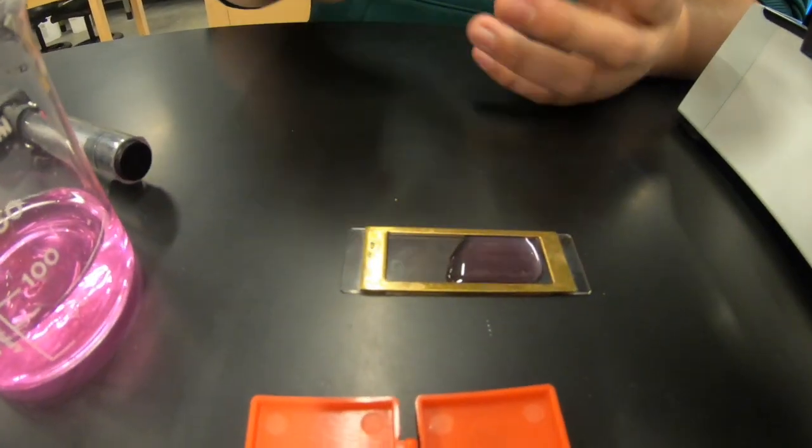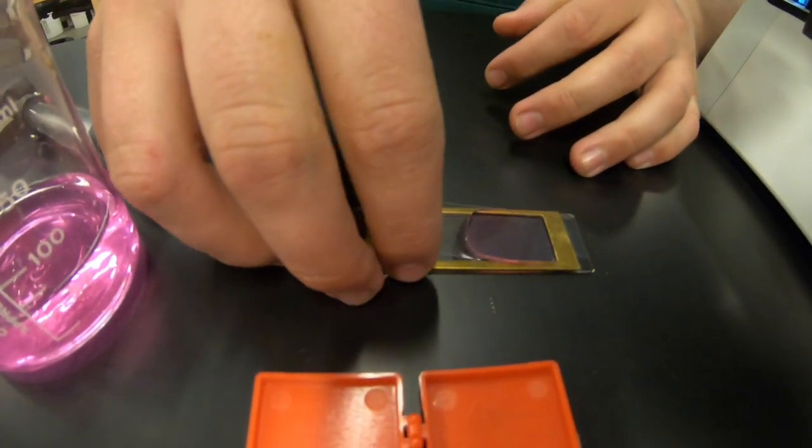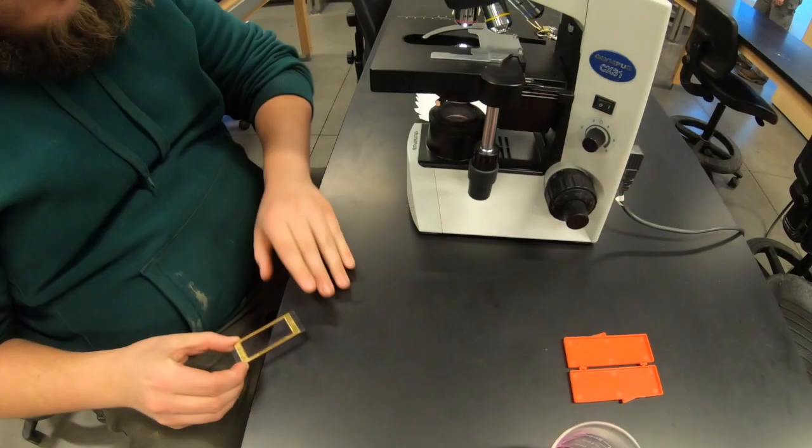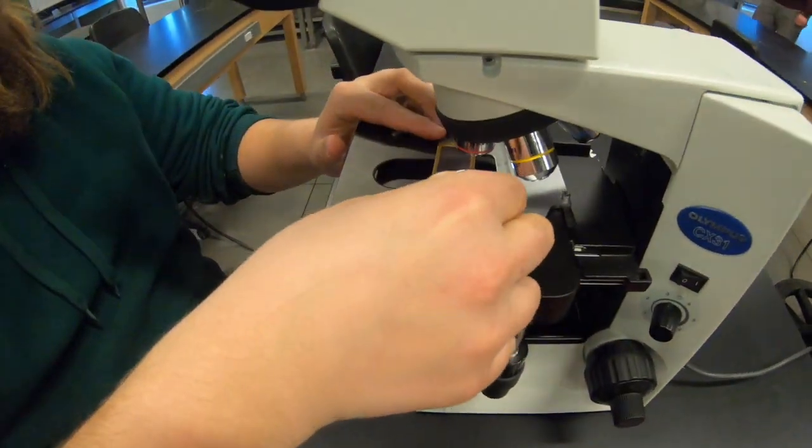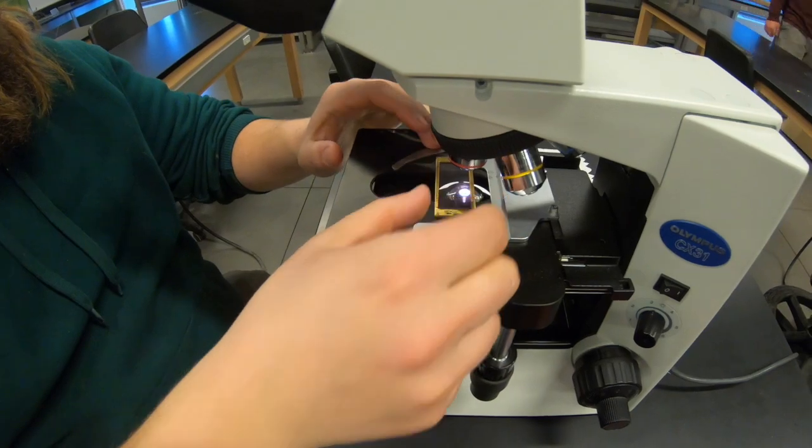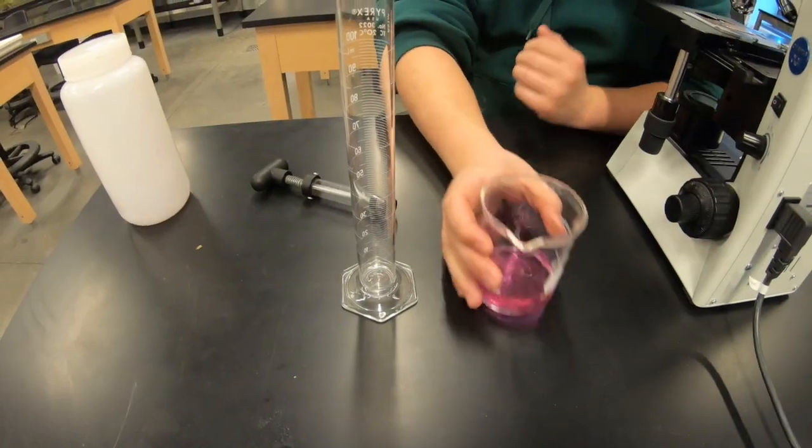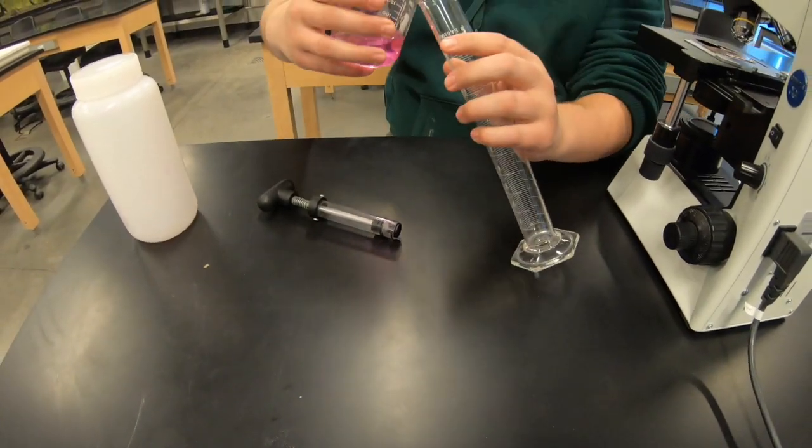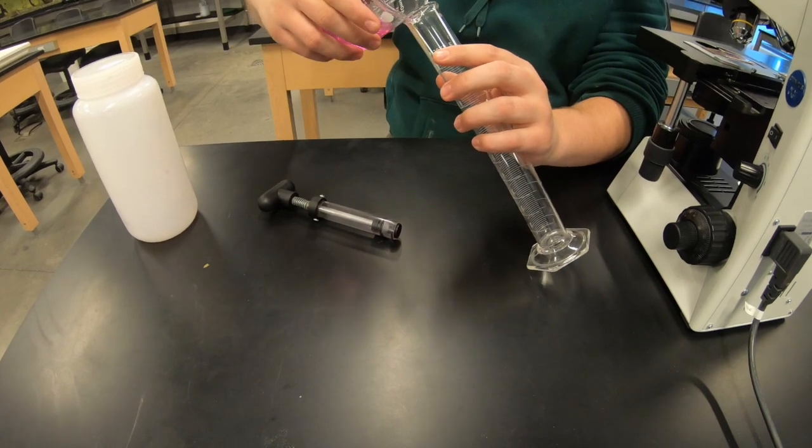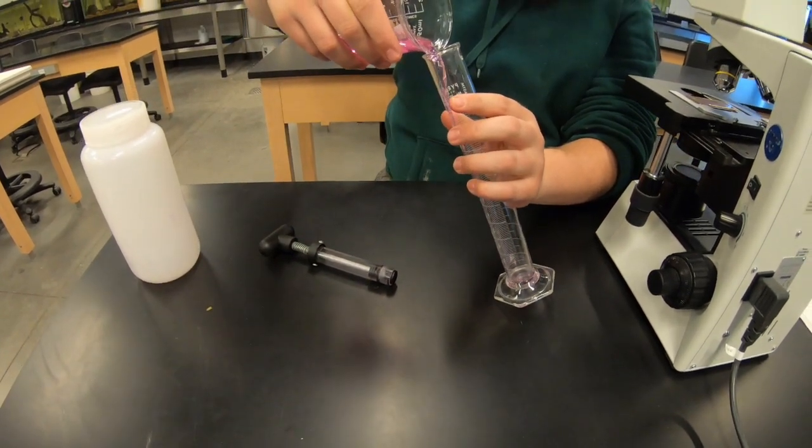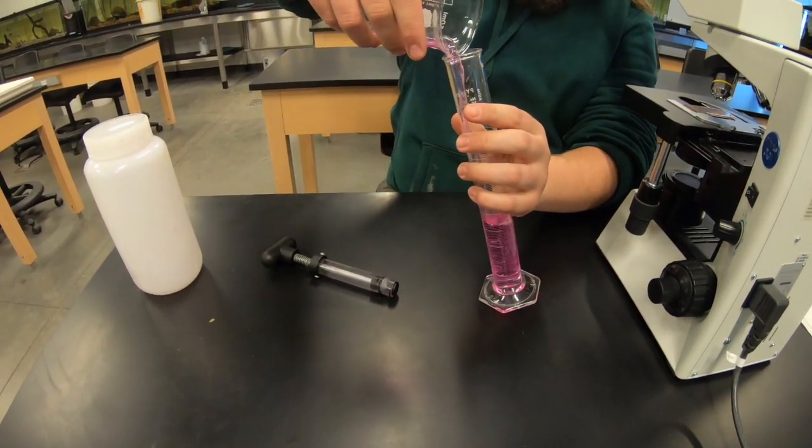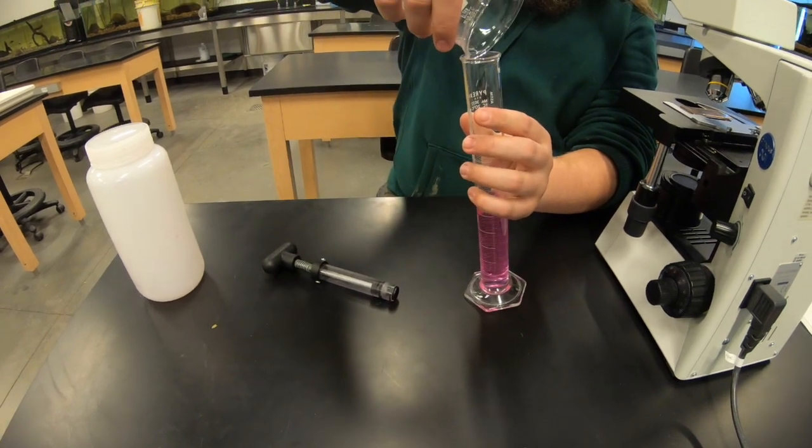Once that's on there, you're going to place your Sedgwick Rafter cell onto the microscope and look at the plankton. You're going to do this in triplicate, so we will be adding three milliliters to our total number. Here we're going to get 53, and we're going to add three to that to make it 56.